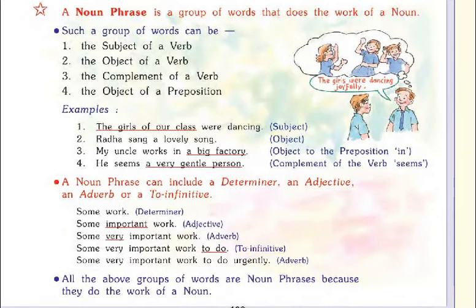Second: 'Radha sang a lovely song' — here the noun phrase is used as an object. Third: 'My uncle works in a big factory' — 'in a big factory' is used as object to the preposition 'in.' Fourth: 'He seems a very gentle person' — 'a very gentle person' is a complement of the verb 'seems.' So a noun phrase can include a determiner, an adjective, an adverb, or a to-infinitive.